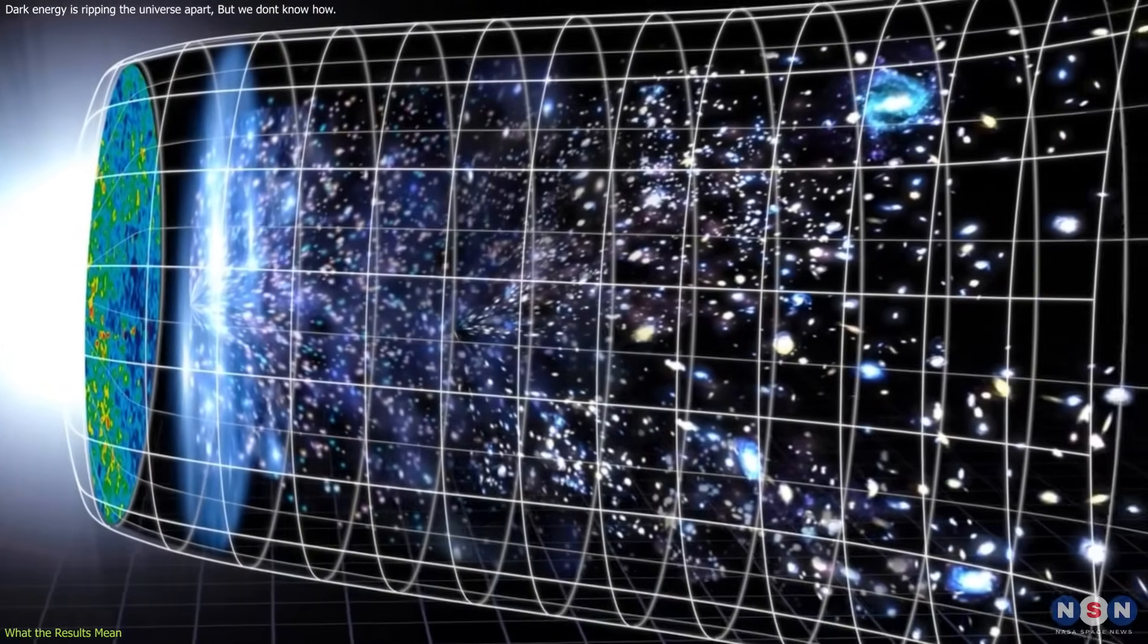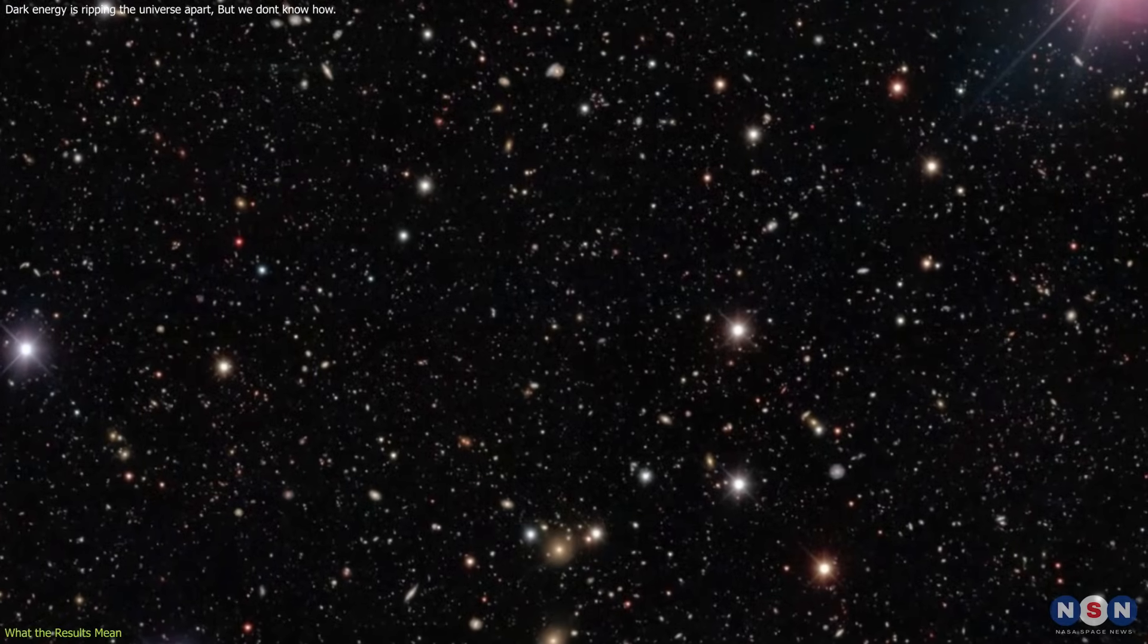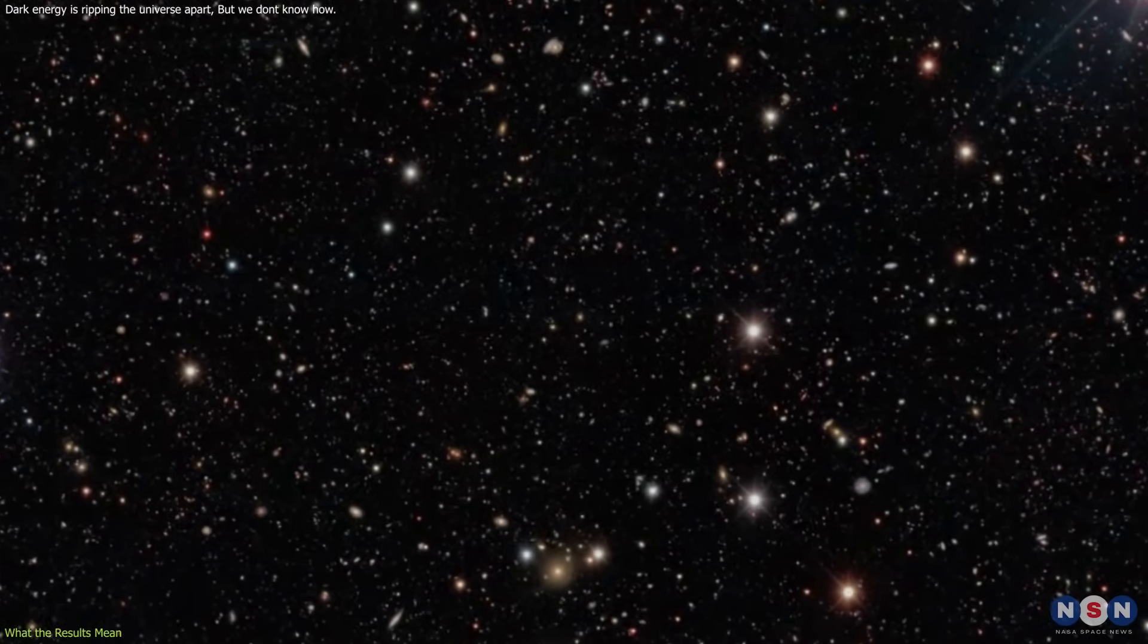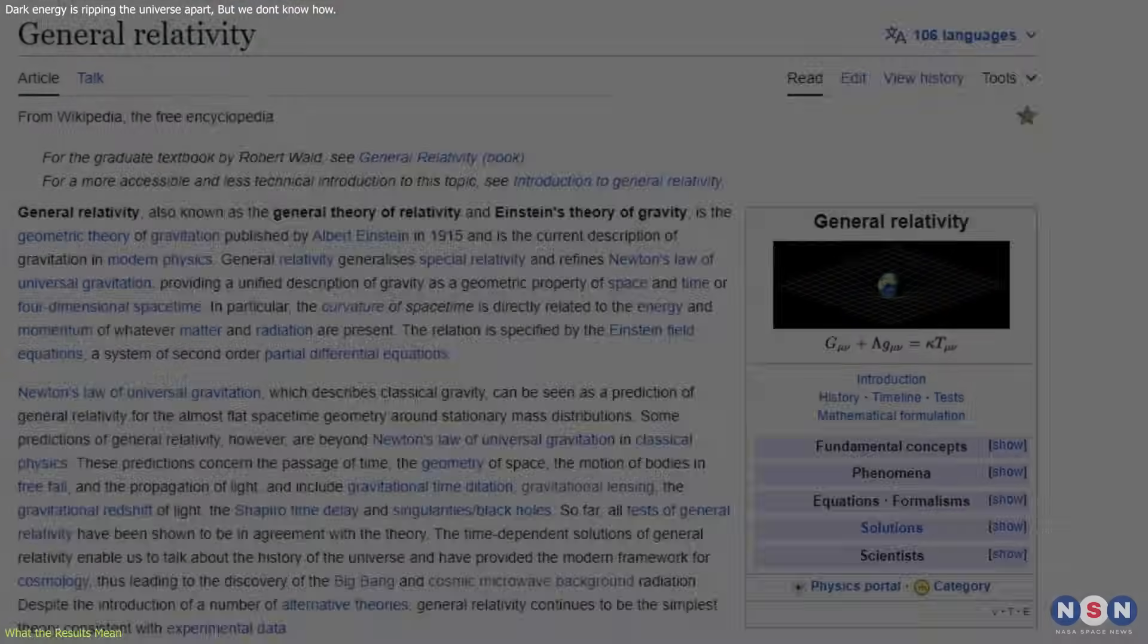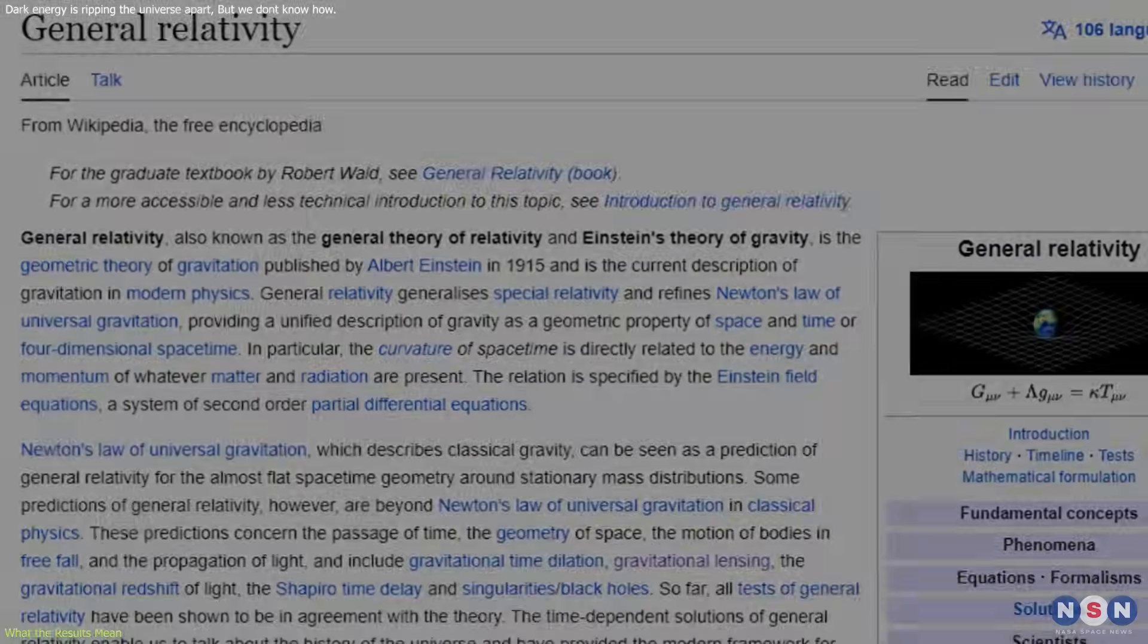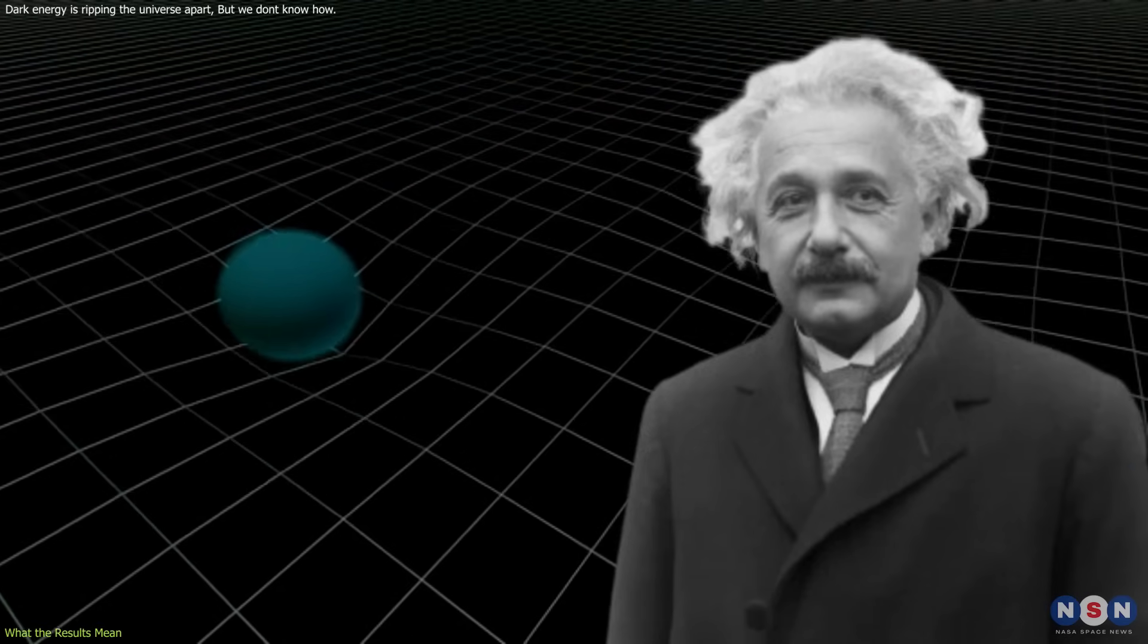It is based on two main assumptions: that the universe is homogeneous and isotropic, meaning that it looks the same in all directions and locations, and that the universe is governed by general relativity, the theory of gravity proposed by Albert Einstein.